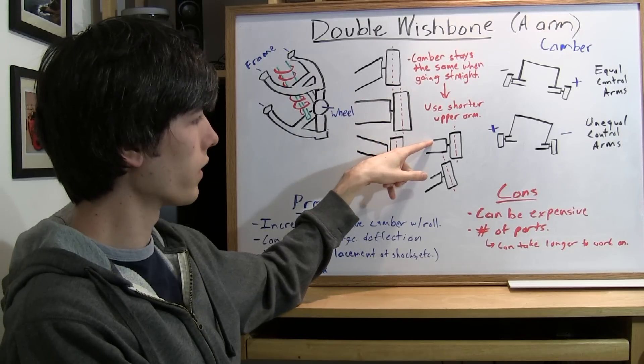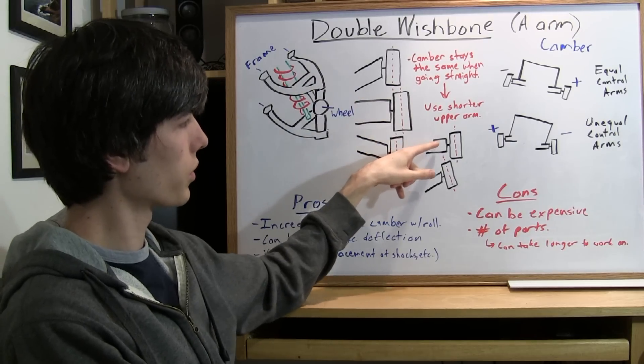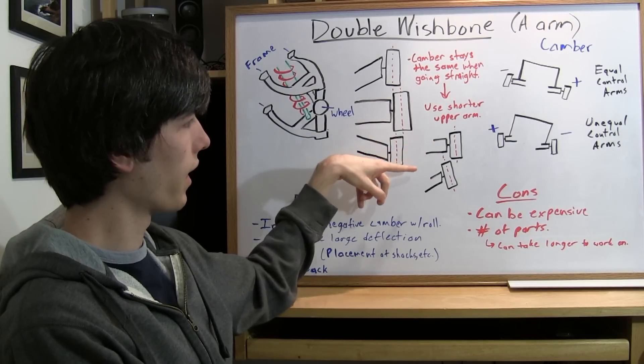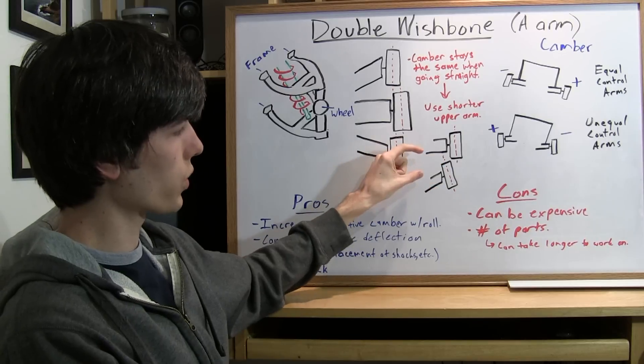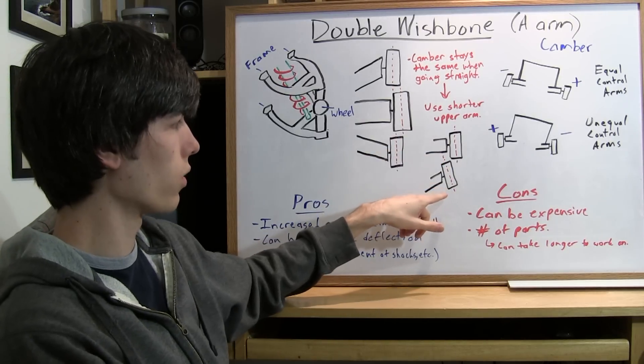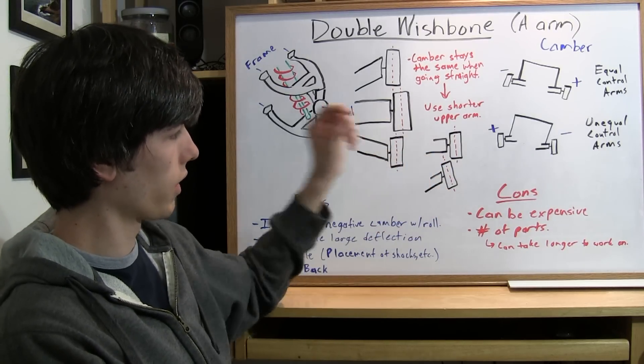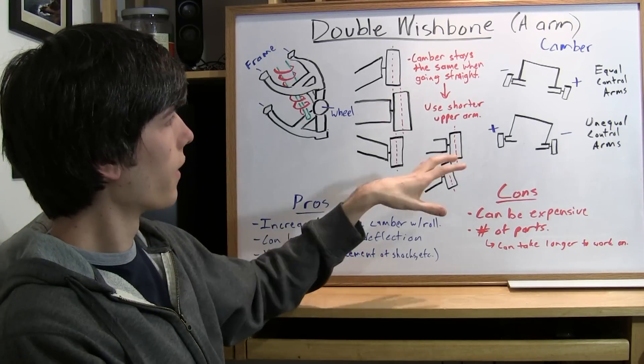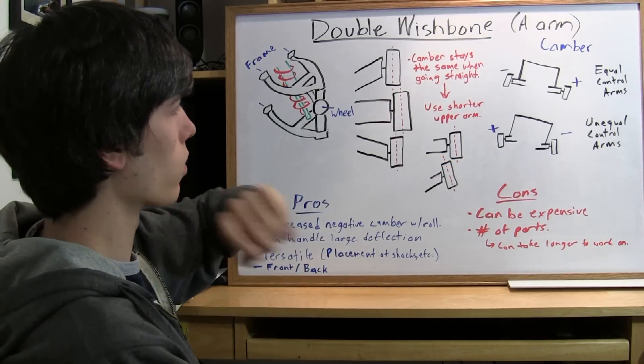So as you can see in this picture, the upper control arm is shorter than the bottom one and as you have vertical travel, now this is exaggerated, but as you have vertical travel you'll have induced negative camber. So that's beneficial when you go around the corner.